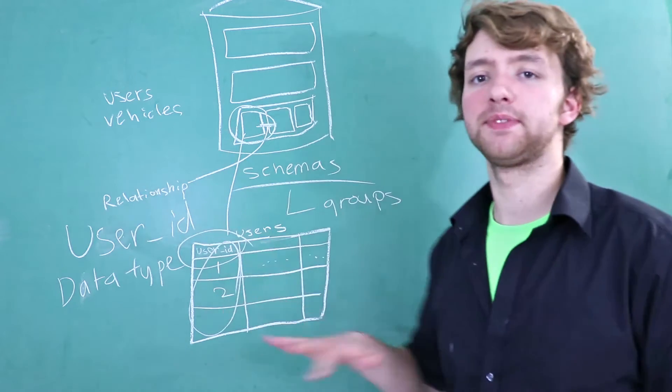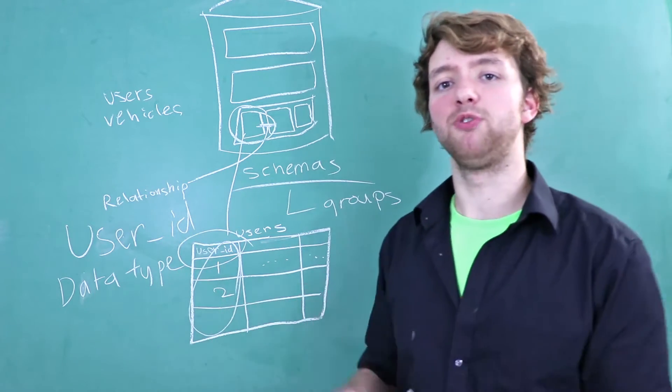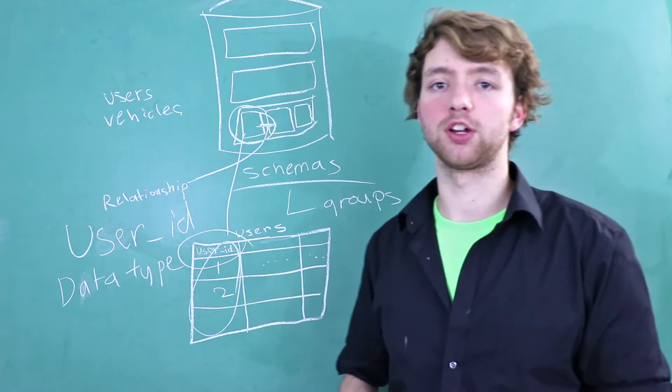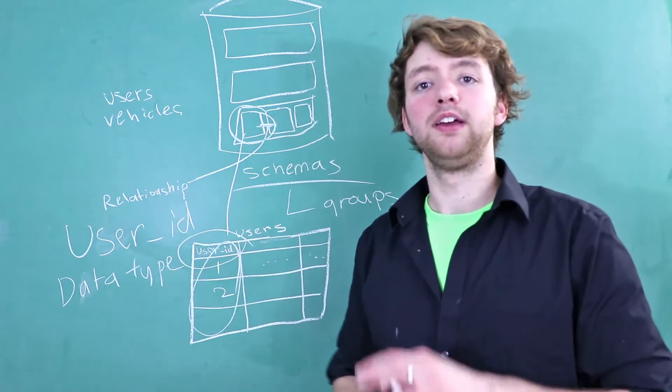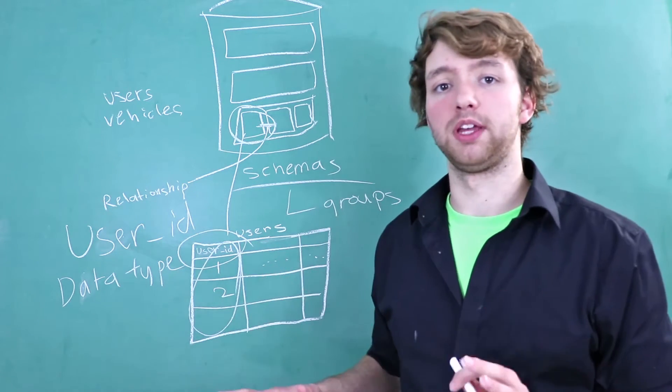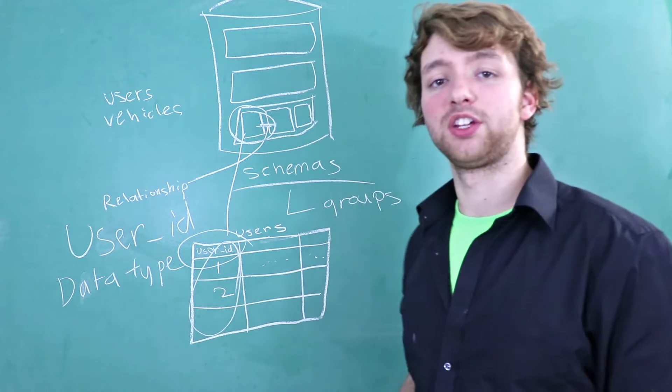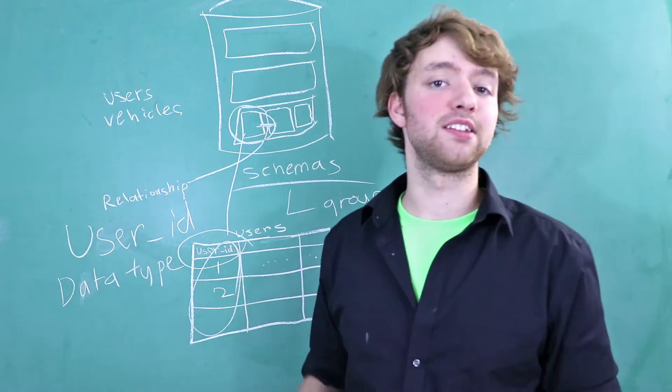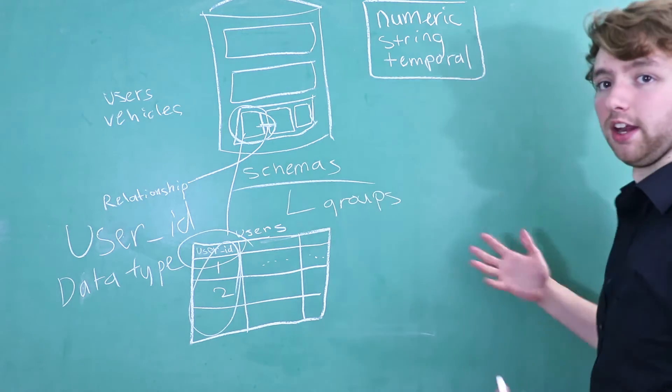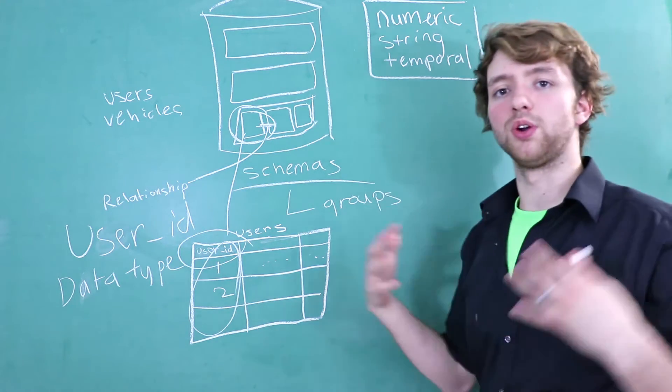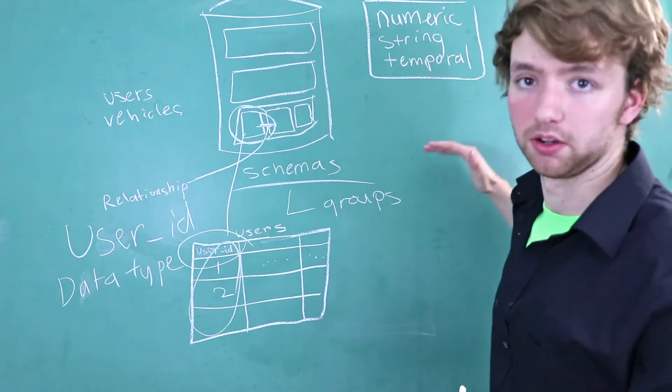There are different categories of data types that we are going to discuss in this video. There are a lot of data types and it's important you don't spend years and years studying the data types before you really understand databases in general. So what I recommend is you learn the basics of data types, then learn all the other things with databases and then come back and learn all the details with the data types. The very first thing you're going to want to start with is the data type categories. These are the general categories for data types. This is pretty universal so any kind of relational database is going to have data types in these categories.